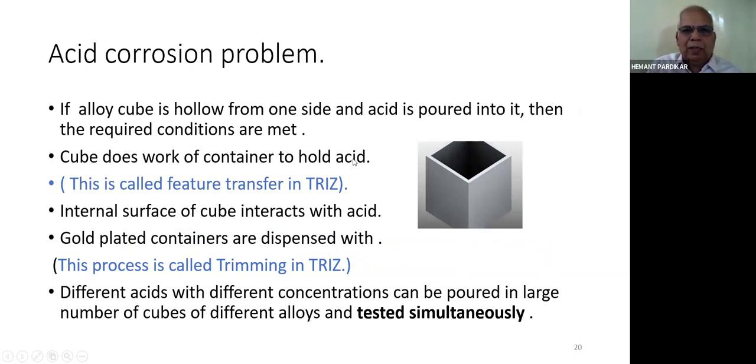Cube does the work of container to hold acid. This is called feature transfer in TRIZ - we have transferred the feature of container to the alloy sample. The internal surface of cube interacts with acid. Gold plated containers are dispensed with completely. This process is called trimming. Trimming is a very often used and very strong method of TRIZ. Now we can have 100, 200, 300 hollow cubes, different composition of alloys, different acids, different strengths of acids and different time periods. All testing can be done simultaneously.